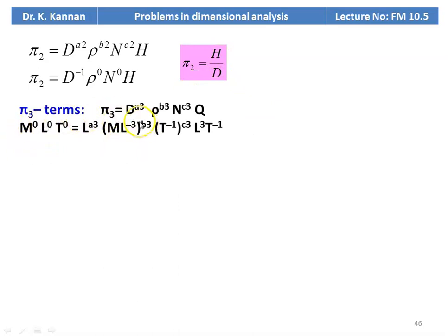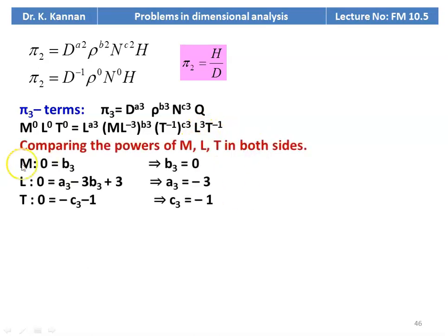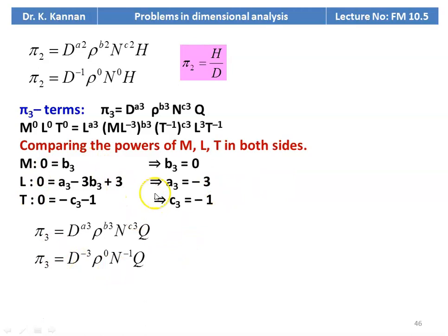For pi3: d^a3 · rho^b3 · n^c3 · q. Substituting dimensions: M⁰L⁰T⁰ = L^a3 · (ML⁻³)^b3 · (T⁻¹)^c3 · L³T⁻¹. Comparing: b3 = 0, c3 = −1, a3 = −3. Therefore pi3 = d⁻³ · rho⁰ · n⁻¹ · q, giving pi3 = q / (n · d³).